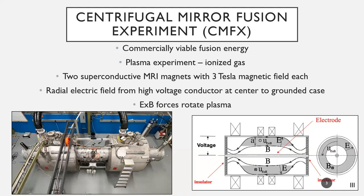So the CMFX, what it's really trying to do is conceptually prove the idea of net positive fusion in a commercially viable way. Essentially, it is pretty cost efficient and relatively simple to maintain compared to other fusion experiments. It's important to note that our experiment is dealing with plasma, an ionized gas. It's essentially like working with lightning. So to contain this plasma, we actually have two superconductive MRI magnets, each with a magnetic field of around three Tesla, and that is quite a large magnetic field.